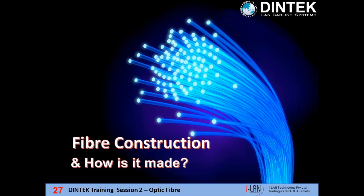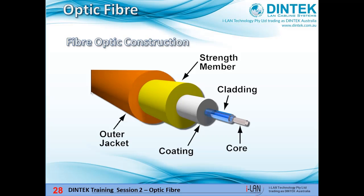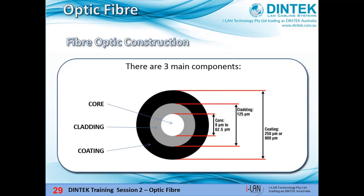How is optic fibre made? Let's start with what it looks like inside. Optic fibre for telecommunications consists of three components: the core in the centre, surrounded by the cladding, and then a coating. Outside of that we have a strength member and an outer jacket to help protect the fibre. It's the core and cladding where all the magic happens. The core is the central region through which light is transmitted, with core sizes ranging from 9 micron to 62.5 micron. The cladding is a glass sheath surrounding the core that acts like a mirror, reflecting light back into the core. The cladding diameter is generally 125 micron — slightly thicker than a typical human hair.